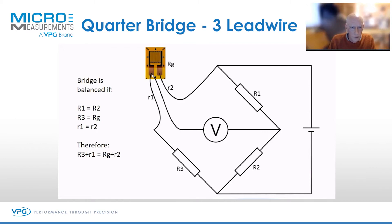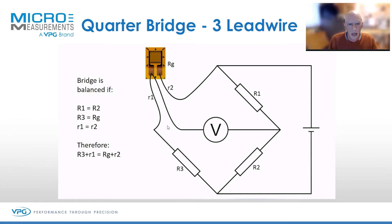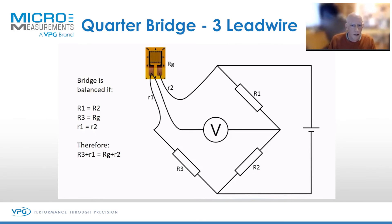The balance condition is: R3 plus r1 equals RG plus r2. The third wire — the so-called three-wire connection — doesn't affect the output because the readout is many megaohms, so it ignores resistance there. The great thing about a three-wire quarter bridge is that it remains balanced regardless of lead wire length. It also remains balanced with small temperature changes in the lead wire, because copper is a good temperature sensor — any delta R will be equal in both arms and cancel out. This is the typical three-wire quarter bridge.